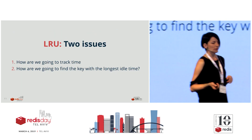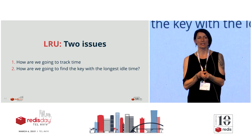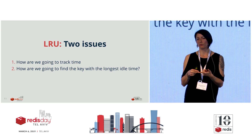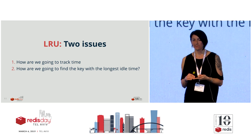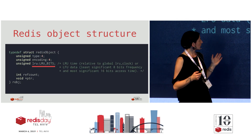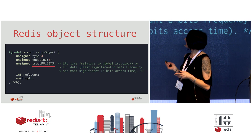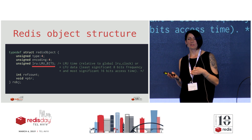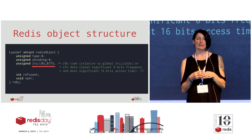And with that we have two questions: how are we going to track time - how are we going to track when a key was last used? And how are we going to find those keys with the longest idle time in our flat key space? This is the Redis object structure. In it you can see a field - the LRU field - with 24 bits assigned to it, that we use for keeping track of when the key was last used.